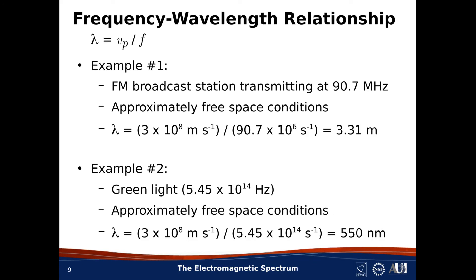Now we have everything we need to work out some practical numbers. Here are two examples. In the first example, let's consider an FM broadcast radio station transmitting at f equals 90.7 megahertz — that's 90.7 times 10 to the sixth hertz. The wave from that station is traveling with a phase velocity very close to C. So the wavelength is simply C divided by f, which is 3.31 meters. In other words, the average distance between two points of constant phase along this wave is 3.31 meters.